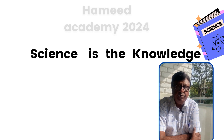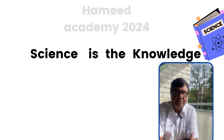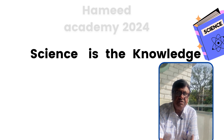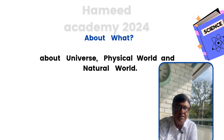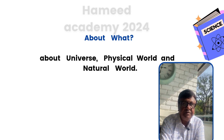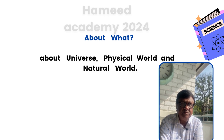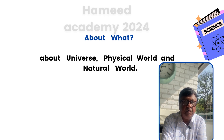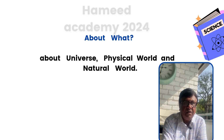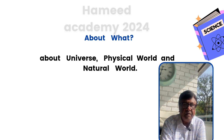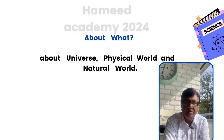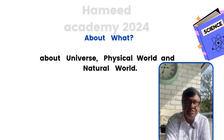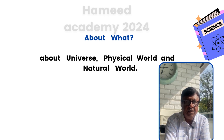The definition of science can be divided into three parts. The first part is: science is knowledge. The second part is about what — when we say science is knowledge, the next question that comes to our mind is: this knowledge is about what? This knowledge is about the universe, physical world, and natural world.